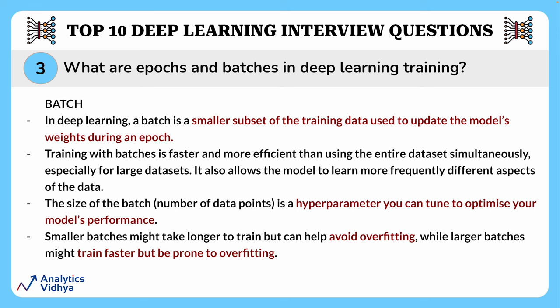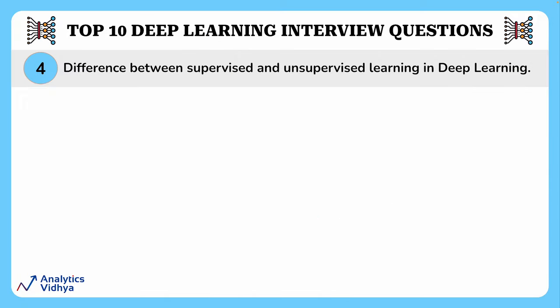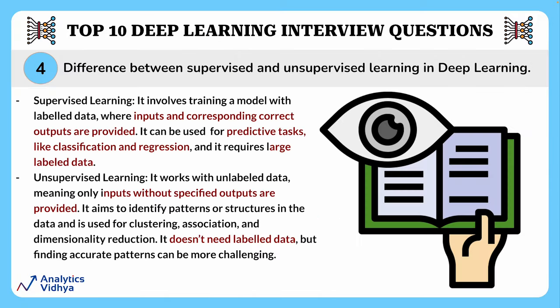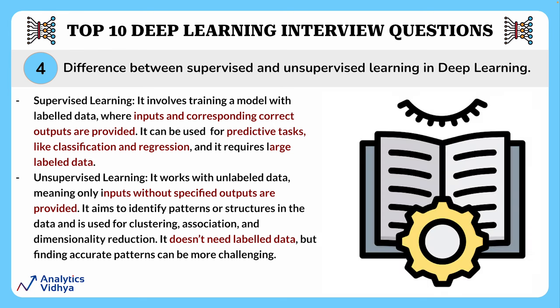The next question asks the difference between supervised and unsupervised learning. Supervised learning involves training a model with labeled data where inputs and corresponding correct outputs are provided — like having a teacher guiding you through examples. It is used for predictive tasks like classification and regression and requires large labeled datasets.